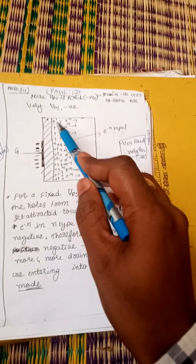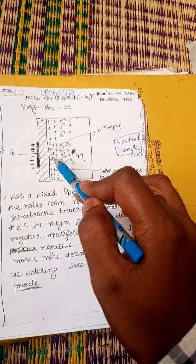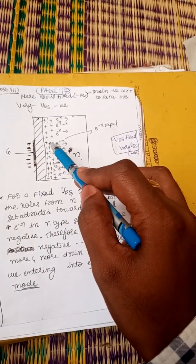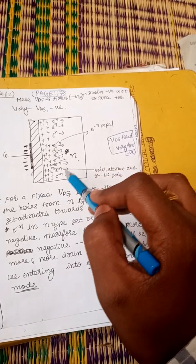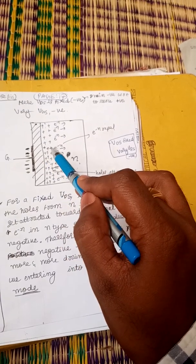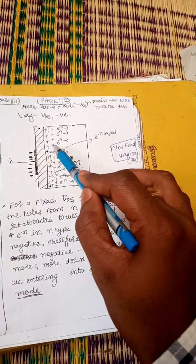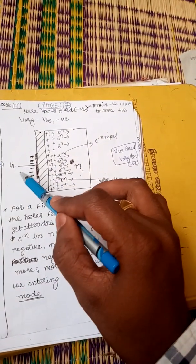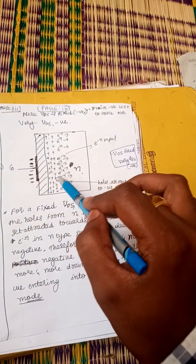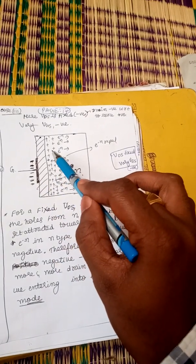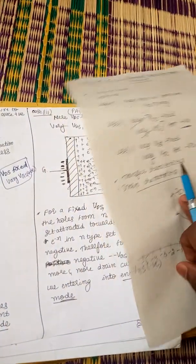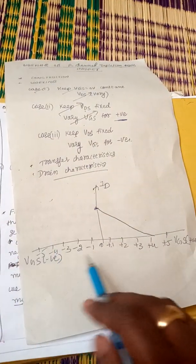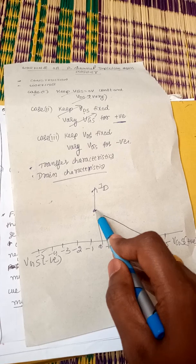Those holes get attracted towards the channel and start to accumulate near the channel, increasing the hole concentration in the channel. The majority electrons get repelled due to the negative potential at the gate. More holes accumulate in the channel, so the drain current increases when the gate is made more and more negative.